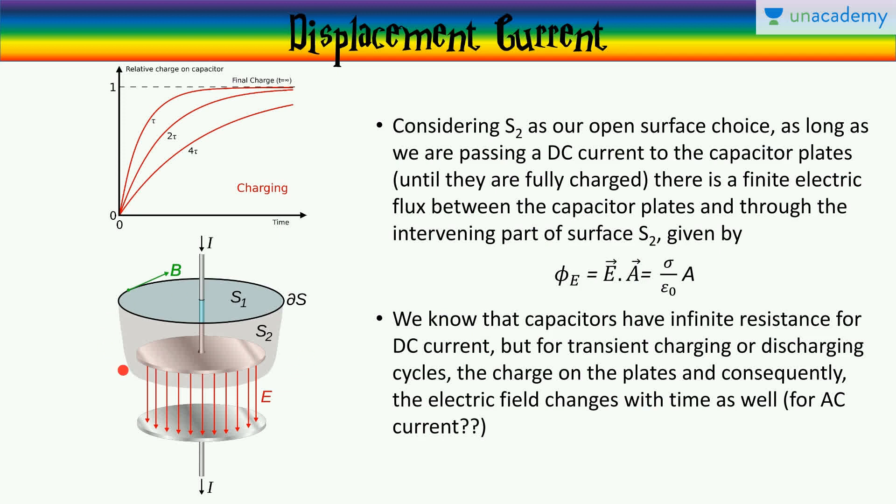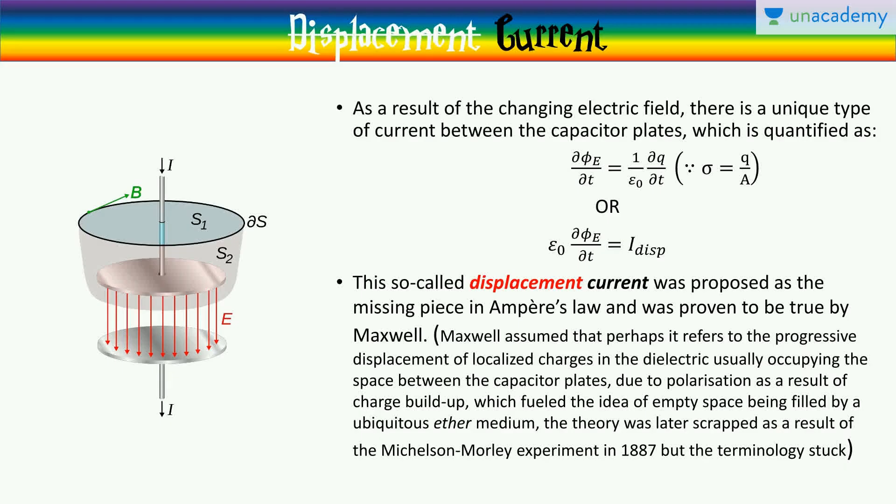We know that capacitors have infinite resistance for DC current, but for transient charging or discharging cycles, the charge on the plates, and consequently, the electric field changes with time as well. Now, this is for DC currents. What do you think would be the case for AC currents, where the electric field is always changing in time? Imagine, think about it. I wanted to think about what will happen in the case of AC currents. We'll come to that later.